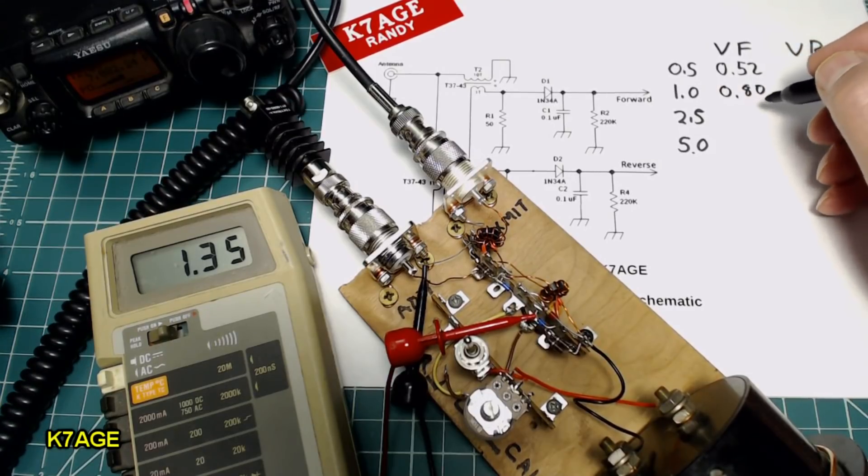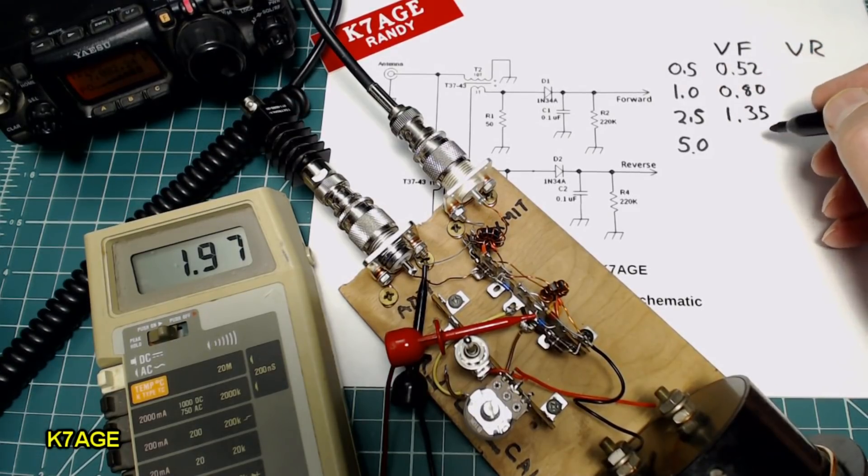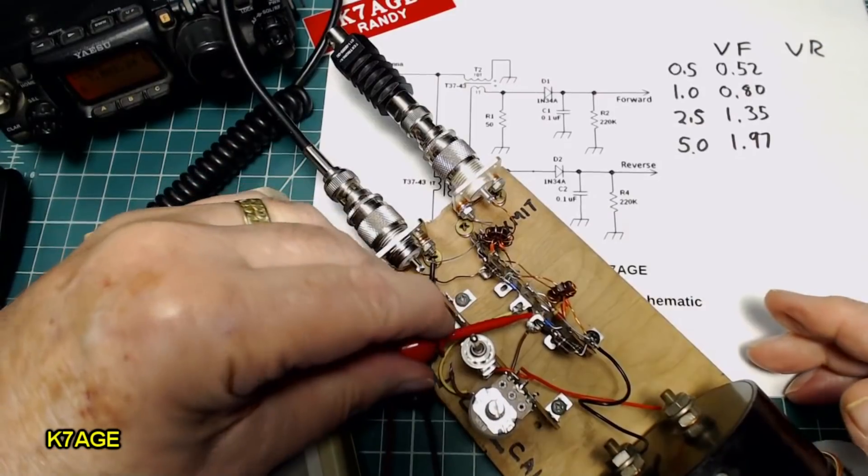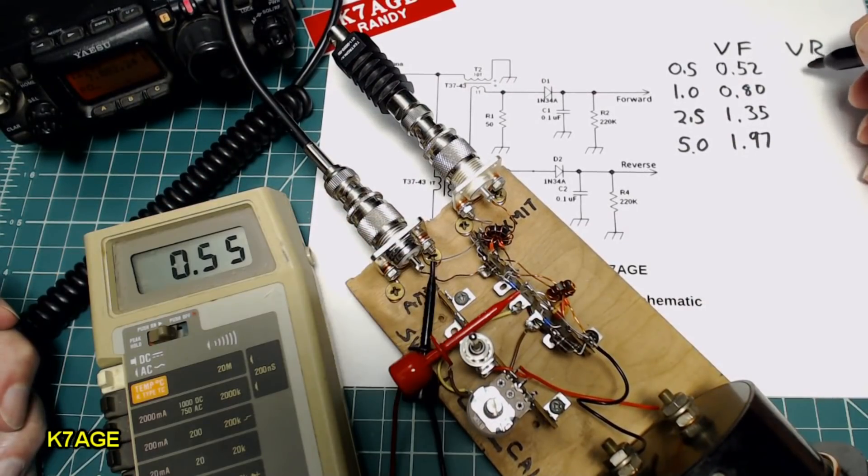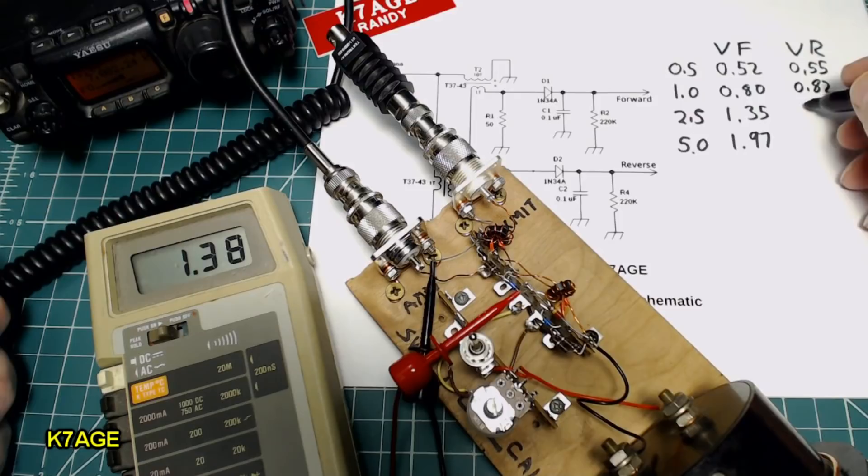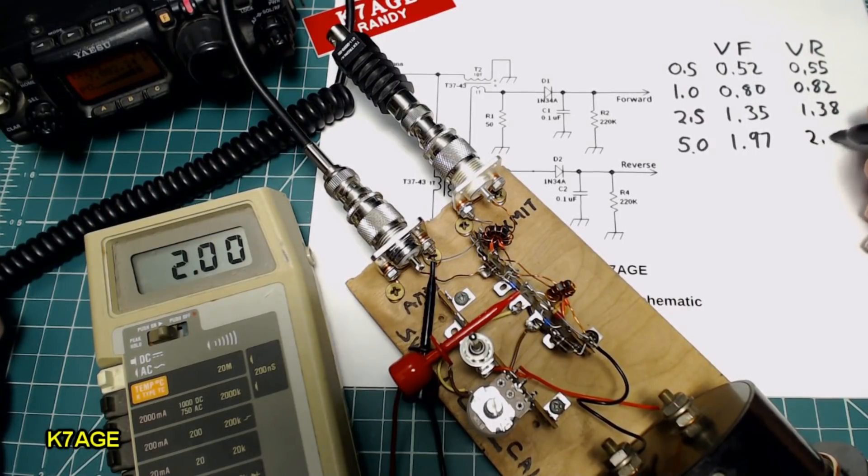Half, 0.5 watts, 1.35. 5 watts, 1.97. Reverse the connections, move the meter. Half watt, 0.55. 1 watt, 0.82. 2.5 watts, 1.38. 5 watts, 2.01.